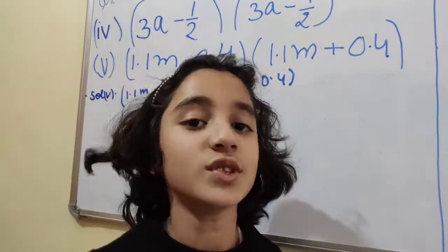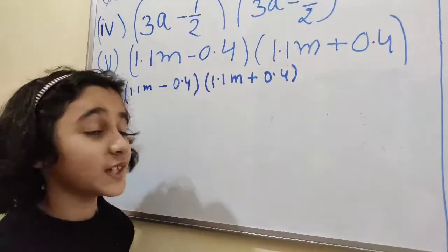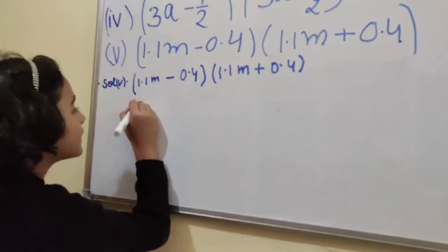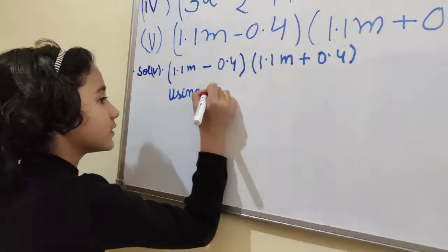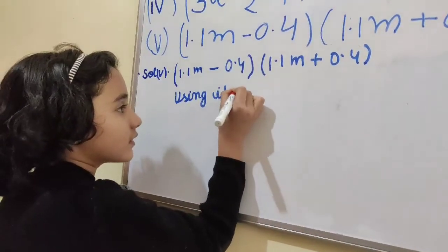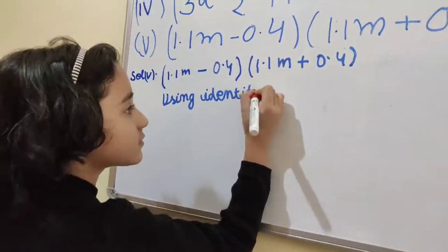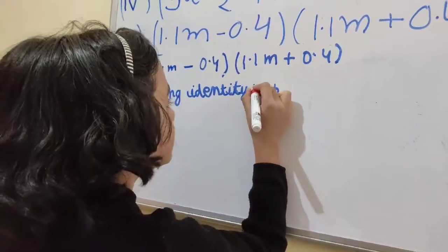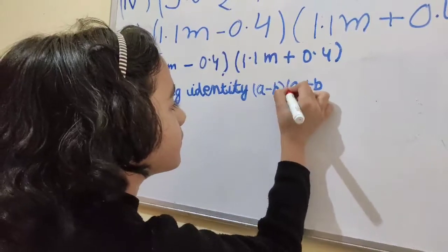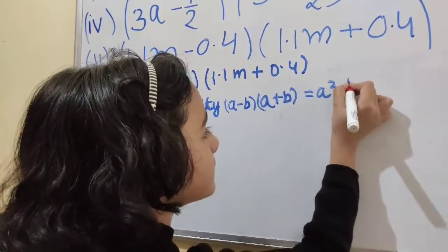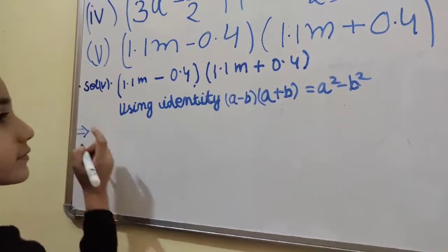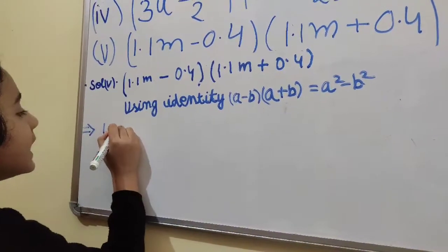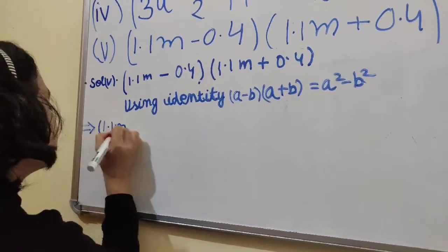Now we are going to use identity (a - b)(a + b) which is equal to a² - b². Using identity (a - b) into (a + b) which is equal to a² - b².